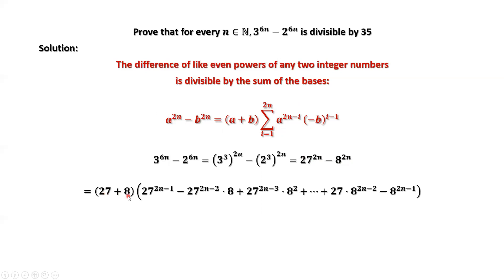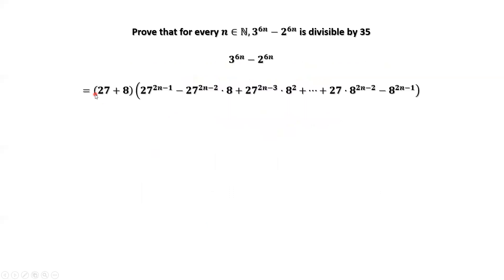Sum of the two bases, 27 plus 8. We apply this formula. This is the second part of this sigma notation. 27 plus 8, which is 35.